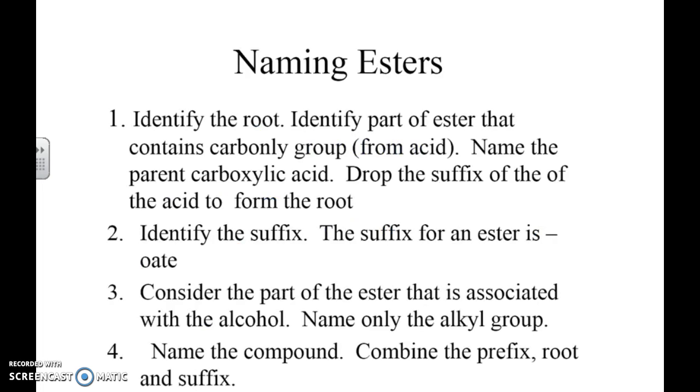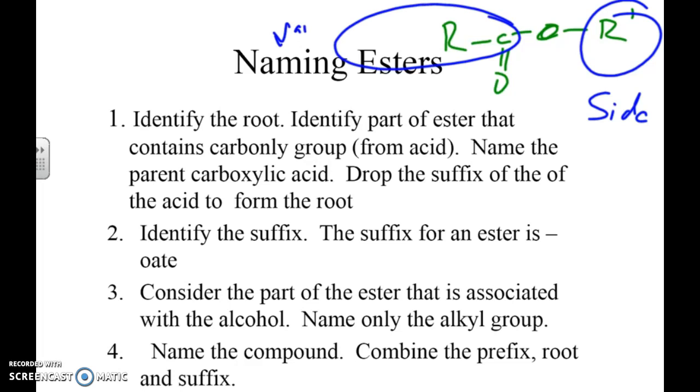When naming esters, we identify the root. This is a little different than previously. Before, it was the longest carbon chain - that's no longer true. You've got R-C double bond O-O-R. Whatever is on this side is the side chain, and this side is the main chain. The ending is oate. Once we figure out the main chain and side chain, it follows all the other rules we've done previously.